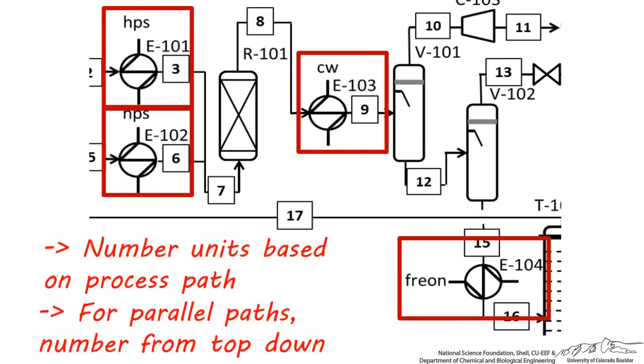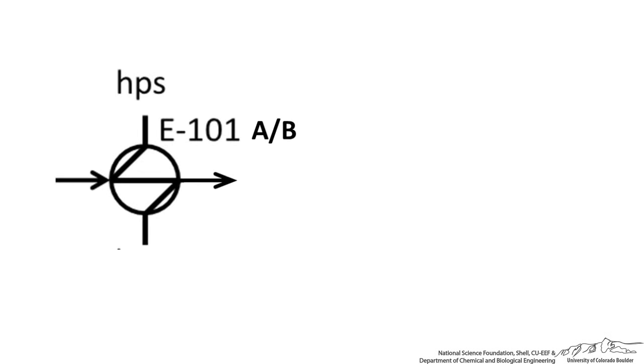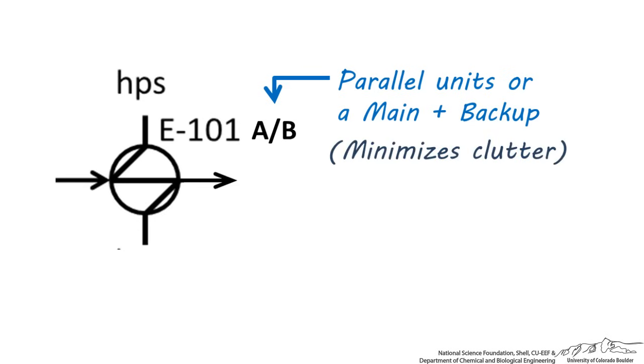I'd like to make one last point about these letter and number labels. If, by chance, there's an A slash B next to the letter and number designation, this means there are actually two of that unit in place. There are either parallel units in place or a main unit and a backup. Because showing these spares or backups would clutter the diagram, this label is oftentimes added to minimize confusion.